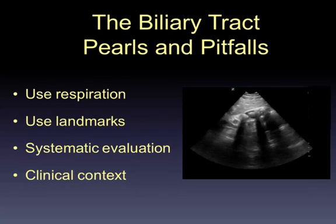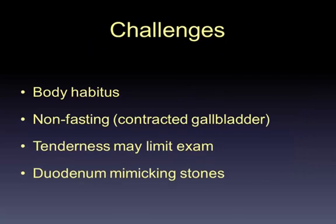A few pearls and pitfalls: one of the most useful techniques is to use respiration to get good views of the gallbladder. Make sure you're looking for sonographic landmarks — your portal vein and main lobar fissure — and make sure you see some hepatic parenchyma nearby so you're not fooled by vessels or bowel loops filled with fluid. Always be systematic: evaluate the body, fundus, and neck of the gallbladder. Pathology hides in the neck. Interpret findings in the wider clinical context — many patients have asymptomatic gallstones, and there may be other pathology causing their symptoms. Conversely, biliary pathology can exist without sonographic abnormality, and you may need further workup such as scintigraphy. This is an operator-dependent skill, and challenges include body habitus, non-fasting patients with bowel gas and contracted gallbladders, patient tenderness limiting the exam, and structures like a gas-filled duodenum that can mimic gallstones.